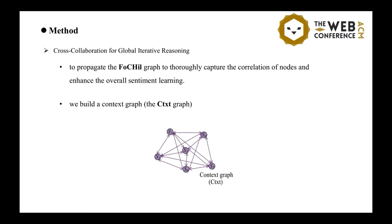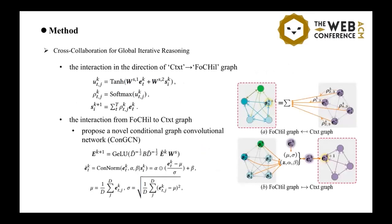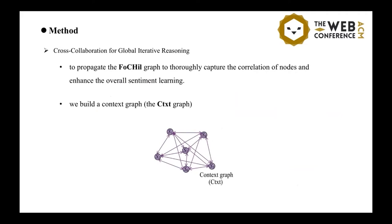Before the propagation, we further built a context graph, which the context graph has shown here. We note that in the context graph, the nodes are at the clause level, instead of the word level.